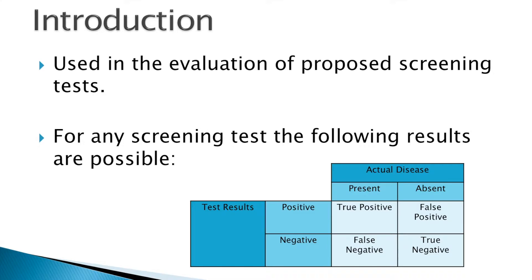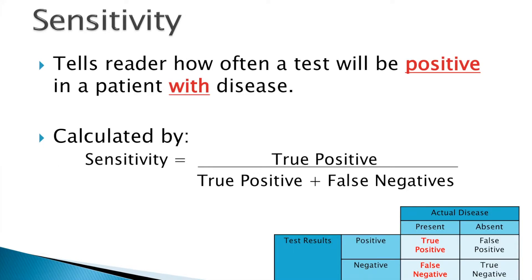This is an important concept to consider and is the basis for how we calculate and understand sensitivity, specificity, and predictive values. Sensitivity tells the reader how often a test will be positive in a patient with the disease. We calculate sensitivity by identifying all true positives and dividing them by the true positives plus the false negatives.